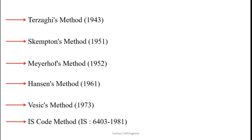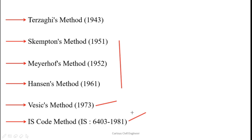Basically, all of these methods are not part of the Mumbai University syllabus. There are only two methods that are part of your syllabus — first one is the Vesic method, and the other one is the IS code method. So if you don't want to study all these methods, you can skip the video and go to the comment section where I have given a timeline. But I strongly recommend you follow the video throughout — having a little bit more knowledge than required never hurts.